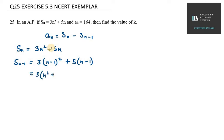3n squared plus 1 minus 2n plus 5n minus 1. So it will be 3n squared plus 3 minus 6n plus 5n minus 5.